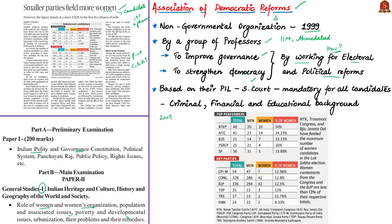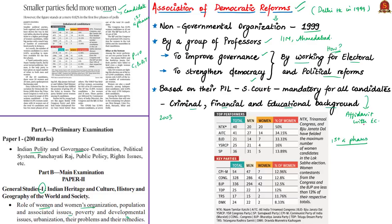The Association for Democratic Reforms is a non-governmental organization established in 1999 by professors from IIM Ahmedabad. Its goal is to improve governance and strengthen democracy by working for electoral and political reforms. The Supreme Court in 2003 gave a verdict making it mandatory to disclose criminal, financial and educational background for all candidates before elections through an affidavit with the Election Commission. This verdict resulted from a public interest litigation filed by ADR in Delhi High Court in 1999. The article states that while big political parties fared poorly in giving opportunities to women, some regional and small parties fared better. One regional party in Tamil Nadu, Nam Tamilar Katchi, gave 50% of allocations to women.